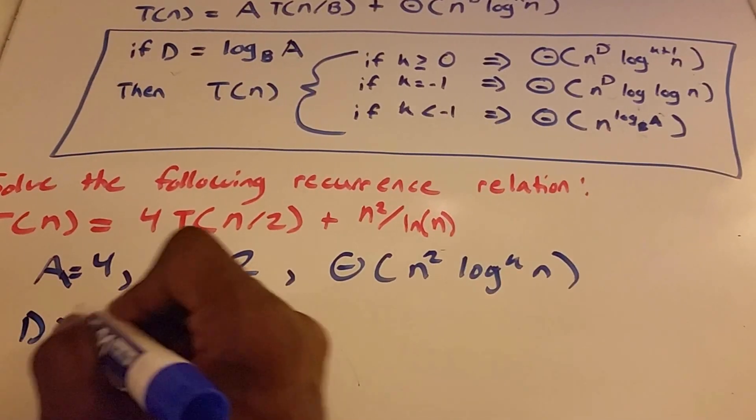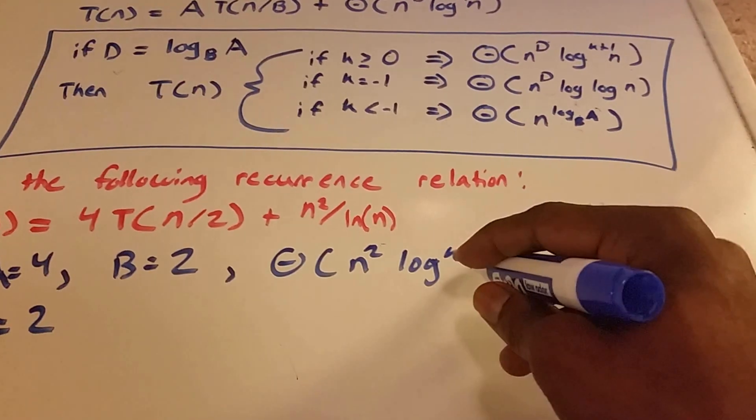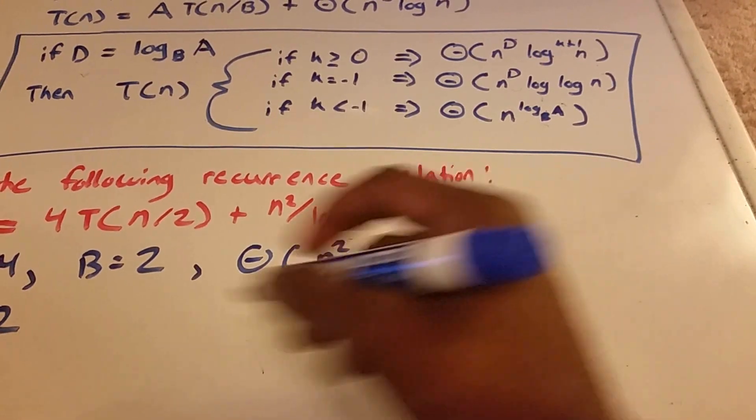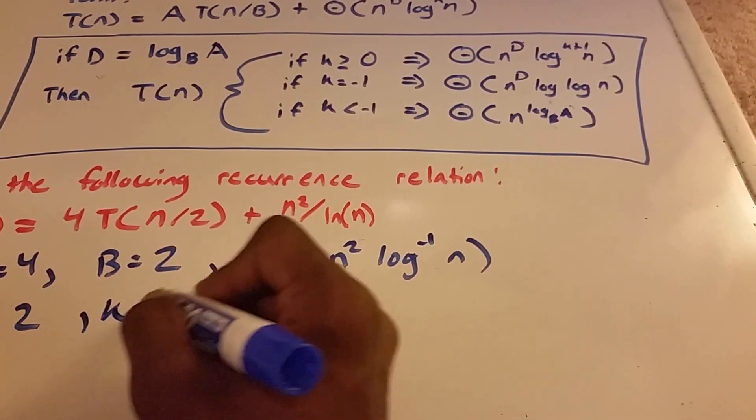So D equals 2. And our k value is negative 1.